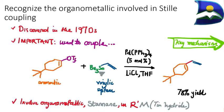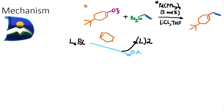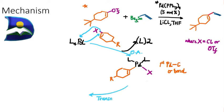The key mechanism of Stille coupling begins with palladium as a catalyst, starting with four ligands attached to it. By ligand exchange and then oxidative addition, we lose two ligands, accommodating oxidative addition with our organohalide — where X is either chlorine or triflate. Through this process, palladium(0) is oxidized to palladium(II), forming a complex with the organohalide. This creates the first palladium-carbon sigma bond.